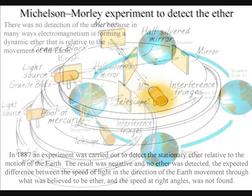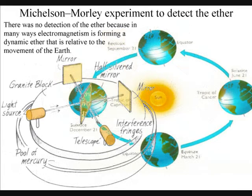The expected difference between the speed of light in the direction of the movement through what was believed to be ether and the speed of light at right angles was not found.